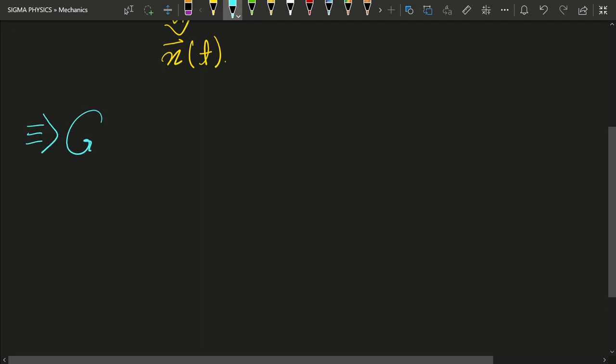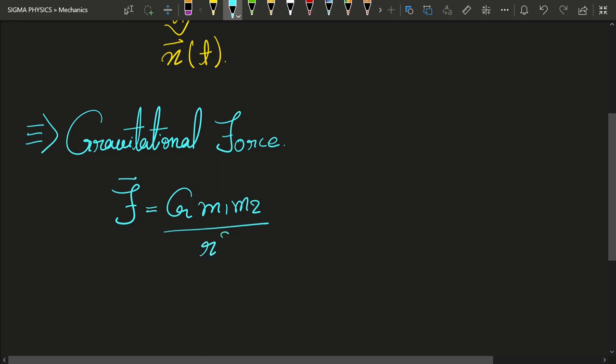Let me explain it with some examples. Look at the gravitational force. The gravitational force is given by this expression, right? Here you can easily see that F is actually a function of r, the separation between the two bodies.